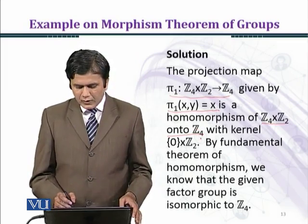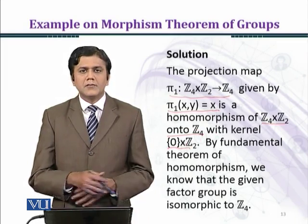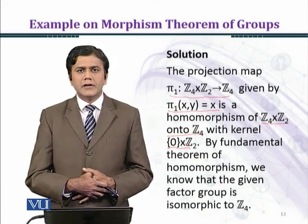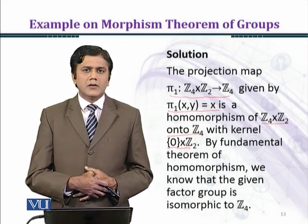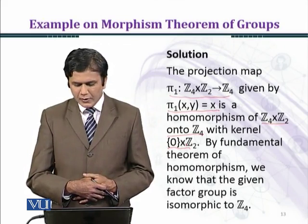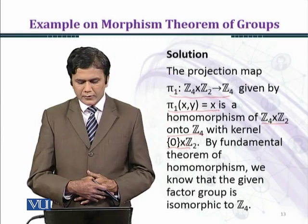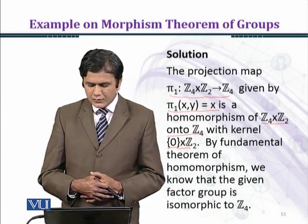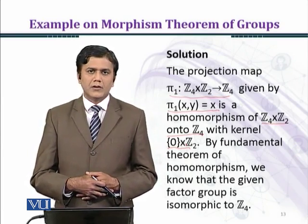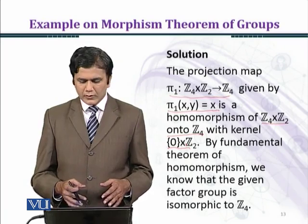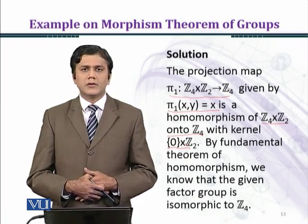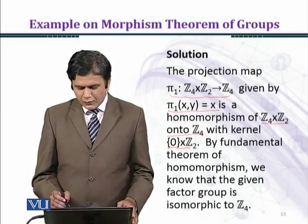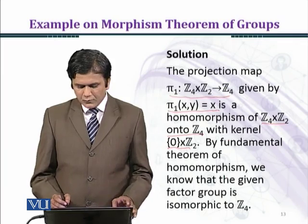Here the kernel is 0 cross Z2. The kernel consists of those elements which map to the identity element. Under pi1, if we find the kernel, those are elements in the domain that map to the identity of Z4.